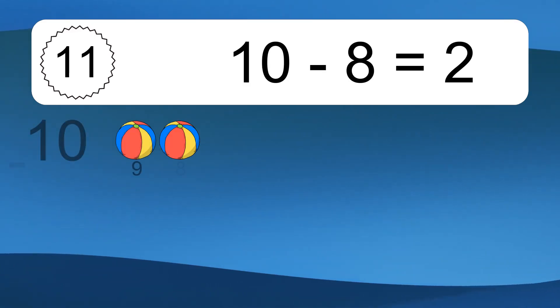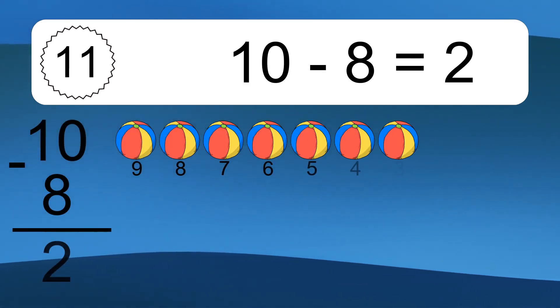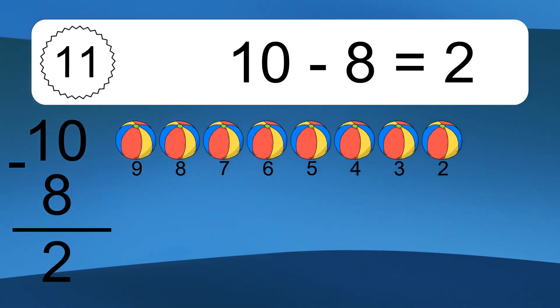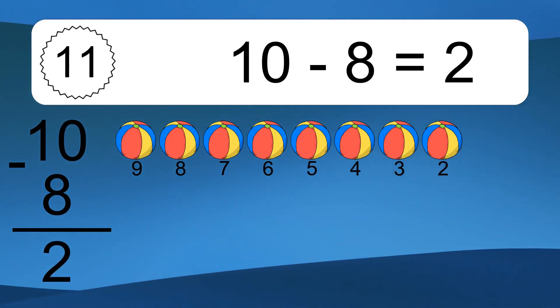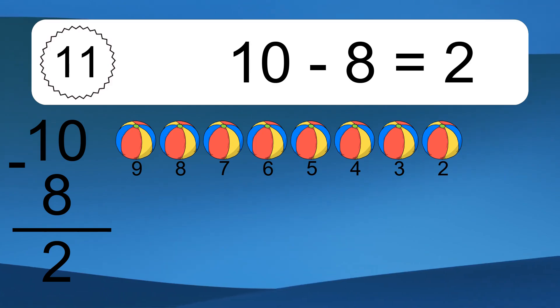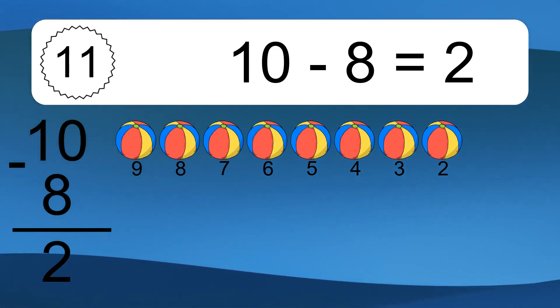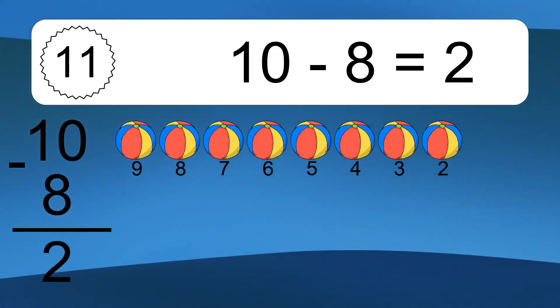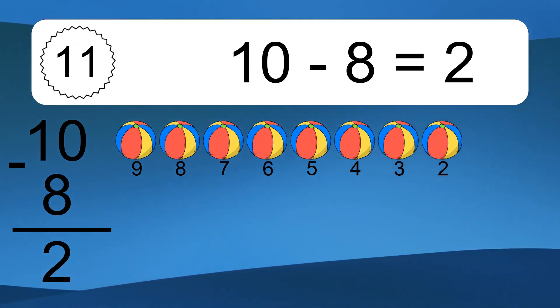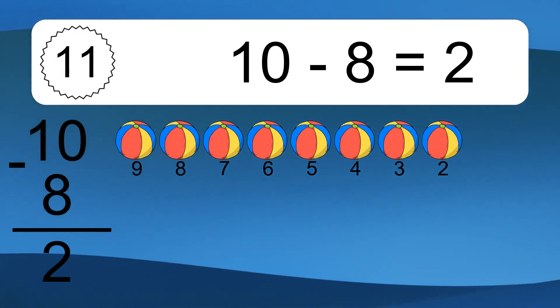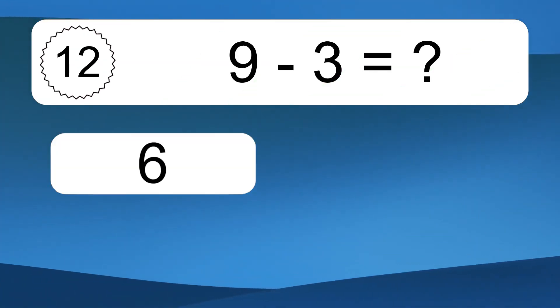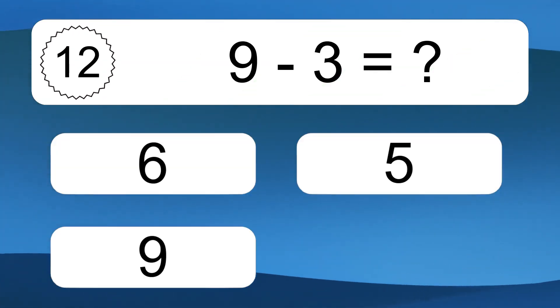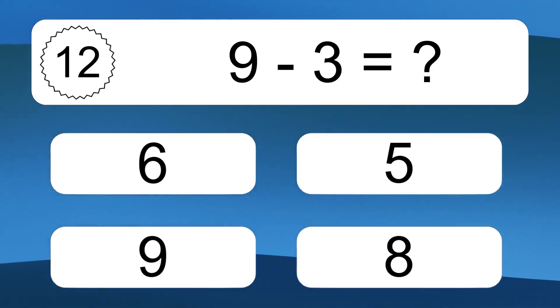10 minus 8 equals what? 10 minus 8 equals 2. Let's count it. 9, 8, 7, 6, 5, 4, 3, 2.